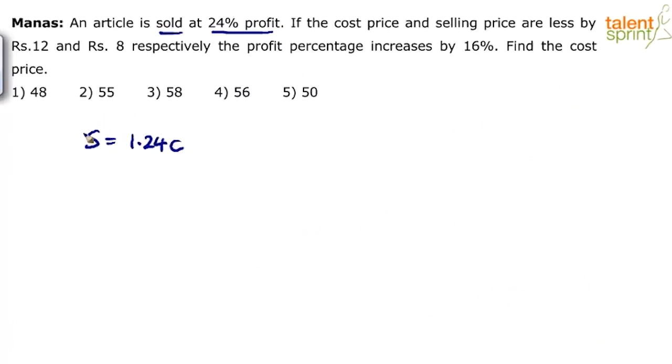I don't have to explain this to you. Go and watch the profit and loss video. If the profit is 24%, selling price will be 124% of cost price. 124% is 1.24. So can you say selling price S equals 1.24 times the cost price C?